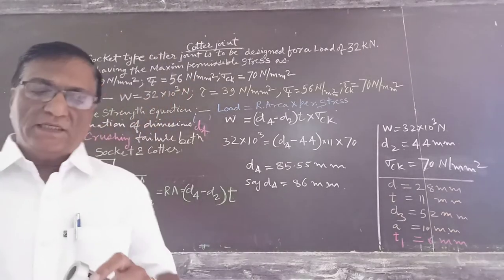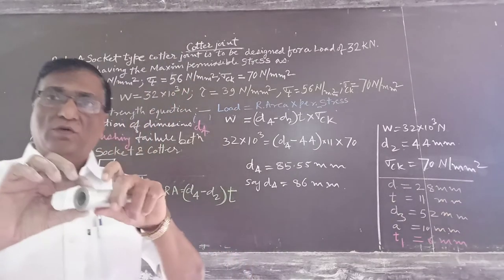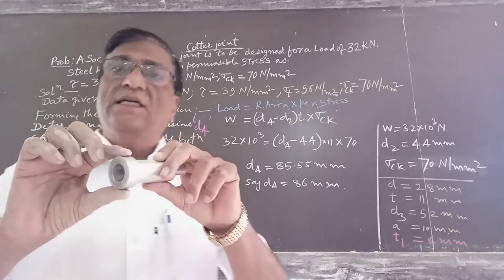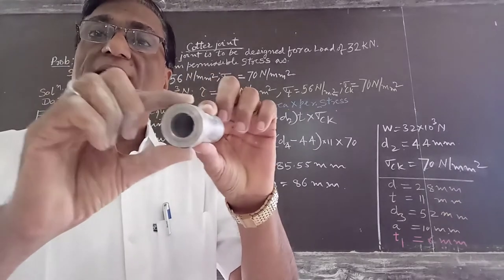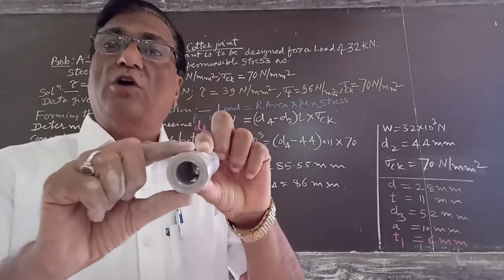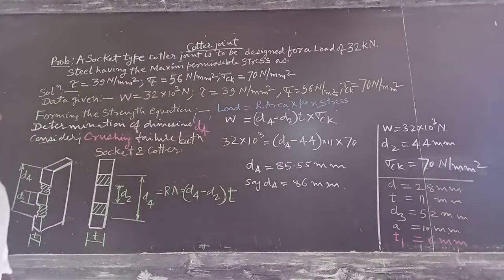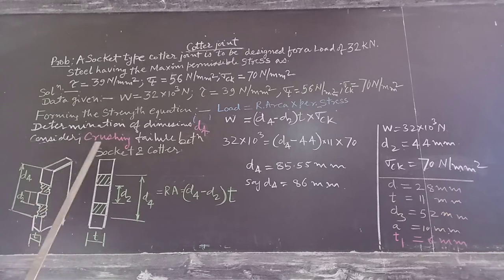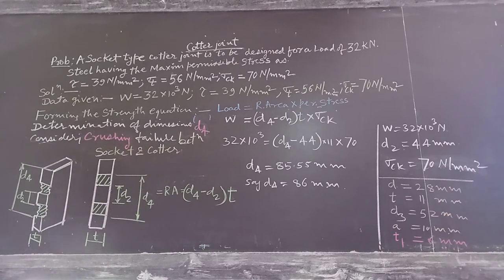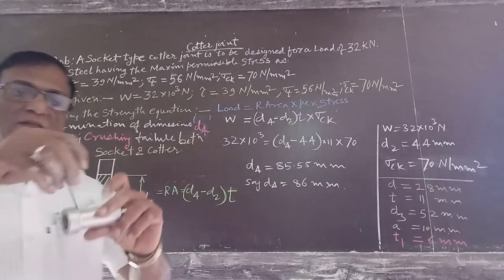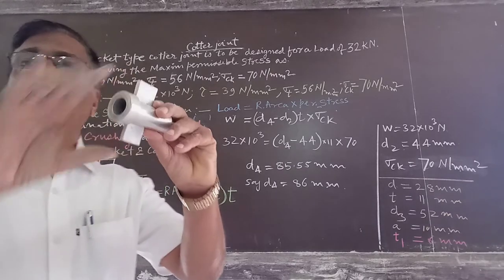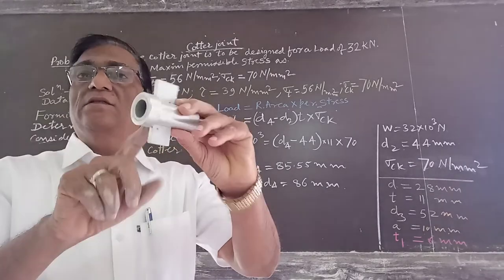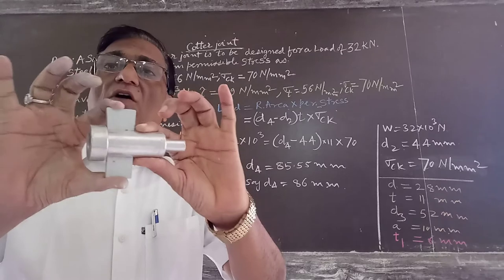Now we will study how to determine the diameter D4, which is the outer diameter of the socket collar. We will determine dimension D4 by considering the crushing failure between the socket and the cotter.